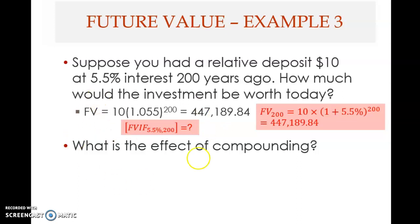The time value table does not cover all interest rates — especially fractional rates like 5.5%. Similarly, if you look for 17%, you cannot find it. Also, the periods in the table stop at around 50, so you cannot find 200 periods. Therefore the use of the table is limited and not very accurate, as not all interest rates or periods are covered.